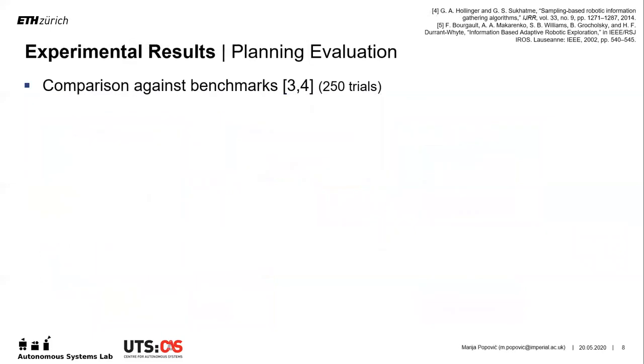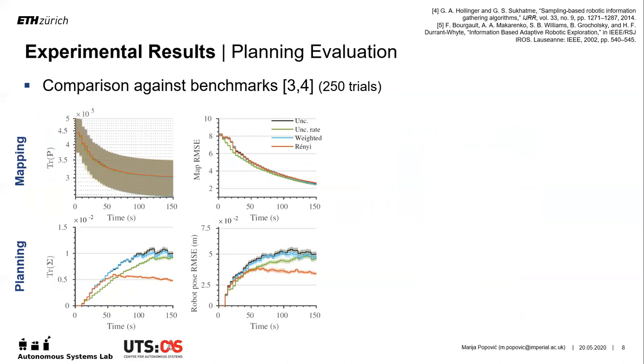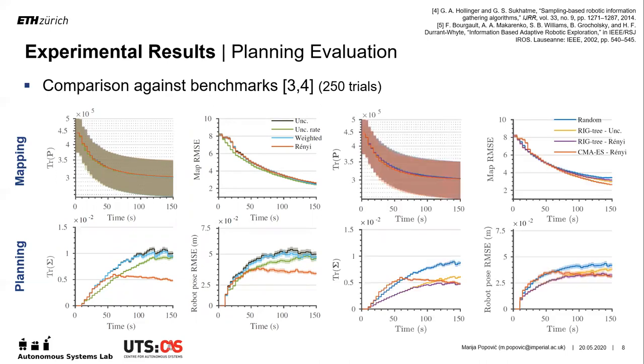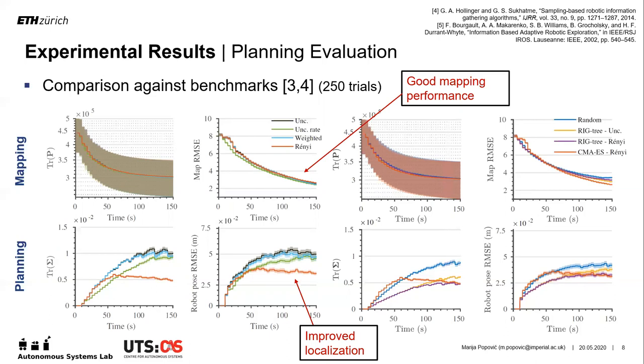In our experiments, we first concentrate on evaluating planning. First, we compare different utility functions in our framework: field map uncertainty reduction only, uncertainty reduction rate, and a weighted linear combination of the field map and robot pose uncertainties. We also compare against different planners, the rapidly information gathering tree with different objectives, and random planning. All methods consider the proposed strategy for mapping under uncertainty and are given the same time budget. The plots show how the methods perform on different information metrics in terms of mapping on the top and planning on the bottom, and a Renyi-based approach is shown in orange. By using the new objective, we effectively trade off between exploration and exploitation to both improve mapping accuracy and localization performance as desired.